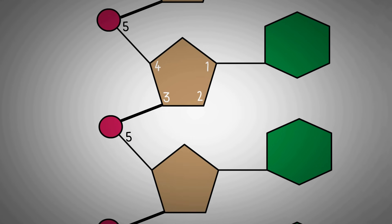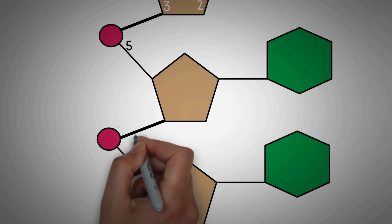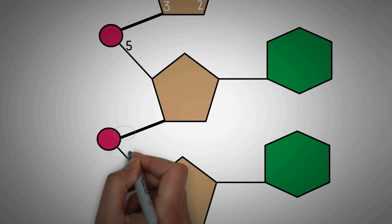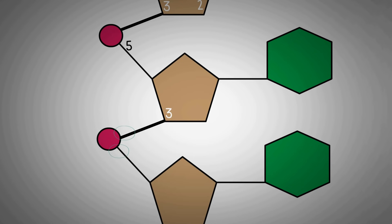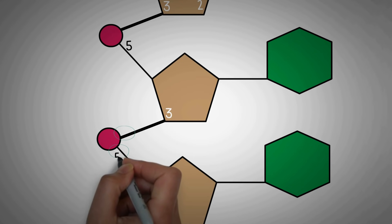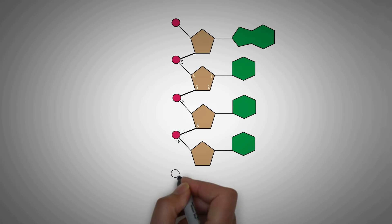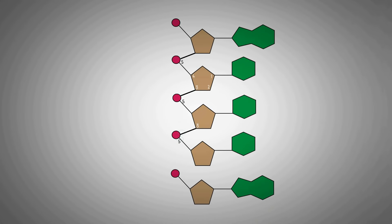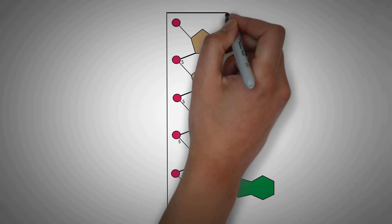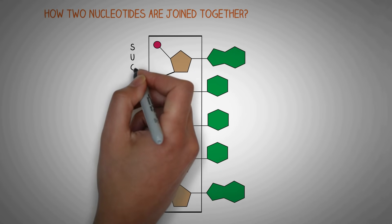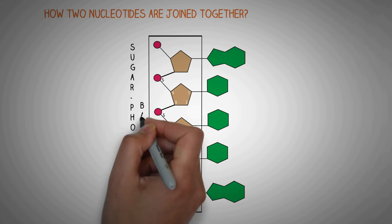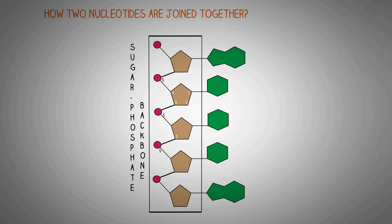This bonding extends in both directions. If we zoom into the structure, you can see that every phosphate is connected to two sugars — one bond with the third carbon of the sugar above and one bond with the fifth carbon of the sugar below. Due to the bond formation between the sugars and phosphates, we create the sugar-phosphate backbone, with all the nitrogenous bases projecting out on one side.